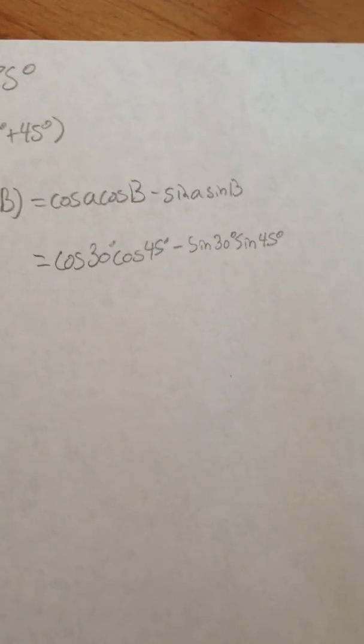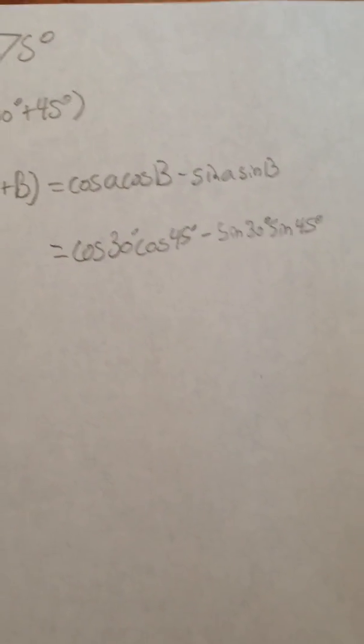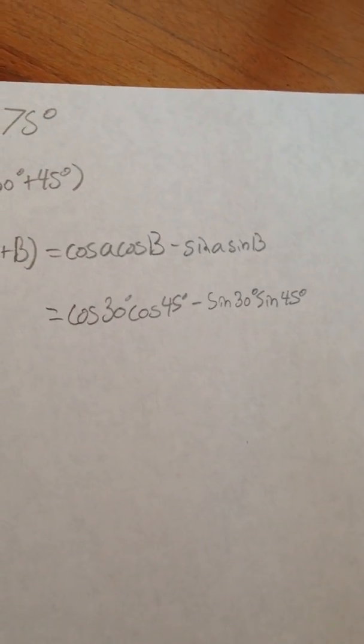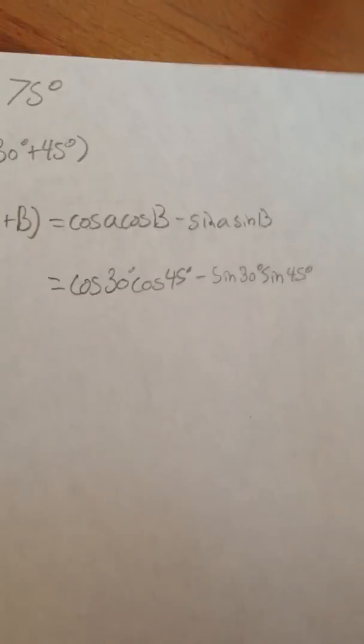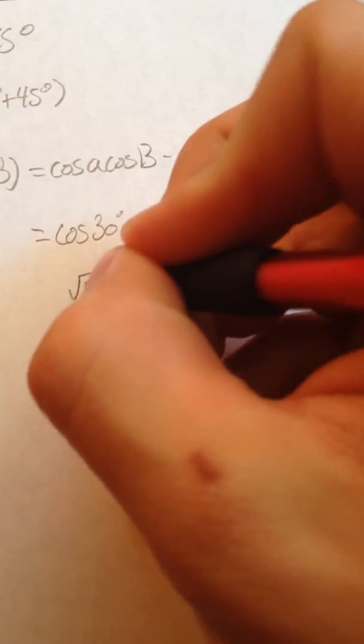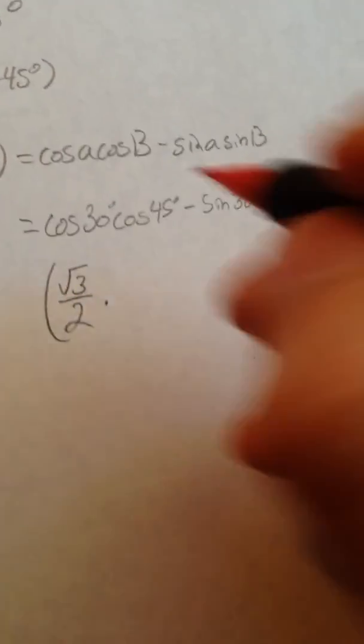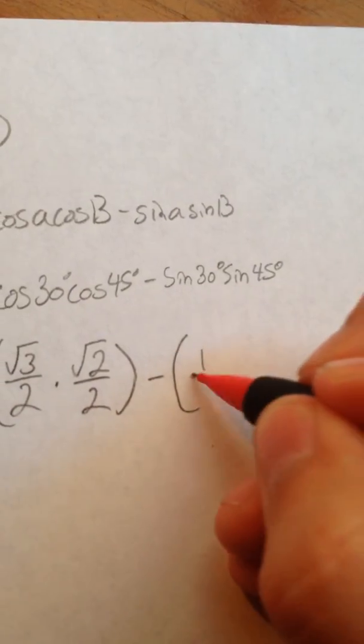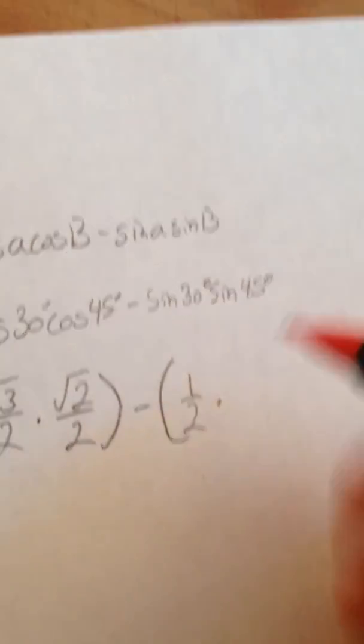Now we're going to look at our unit circle to see what the cosine of 30 degrees and the cosine of 45 degrees equals, so we can plug that into our equation. The cosine of 30 degrees equals √3 over 2, times the cosine of 45 degrees which equals √2 over 2. Then we subtract the sine of 30 degrees, which is 1/2, times the sine of 45 degrees, which equals √2 over 2.